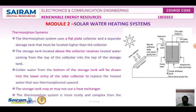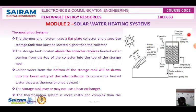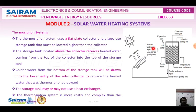The storage tank may or may not use a heat exchanger; fossil fuels can also be used as auxiliary heating. Cold water from the bottom of the storage tank is drawn into the lower entry of the solar collector to replace the heated water — this is called the thermosyphon upward flow. The cold water moves down and hot water moves up; the hot water at the top is supplied to the tap.